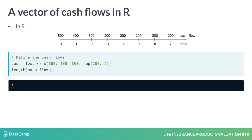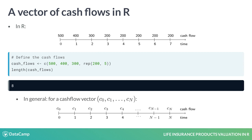The length of the vector cash flows is eight, as expected. The timeline at the bottom shows a general notation for a cash flow vector, which starts from c0 at time zero and runs up to cn at time n. The length of this vector is n plus one.